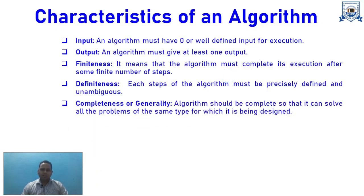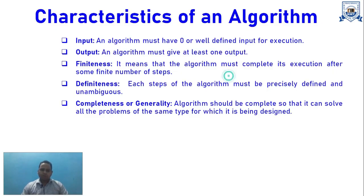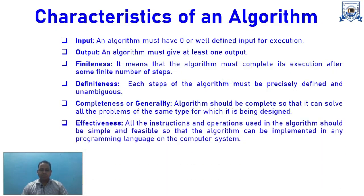Fifth, Completeness: the algorithm must solve all problems of the same type it is designed for. For example, an algorithm that adds two numbers must be able to add different types of numbers — integers, floating point numbers, etc. It must be applicable to all problems of the same type.